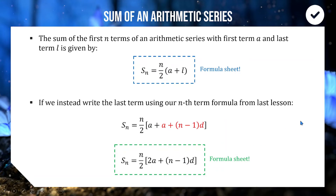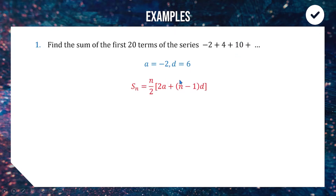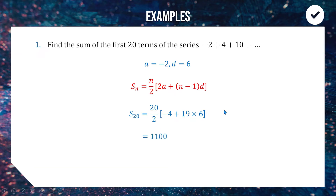Let's look at some examples. Find the sum of the first 20 terms of this series. The series is arithmetic, starting at minus 2 and adding 6 each time, so a = −2 and d = 6. Using the sum formula with n = 20: we have 20/2 outside of (2 × −2 + 19 × 6), giving a total answer of 1100.